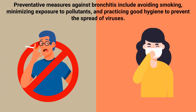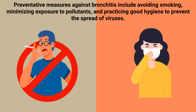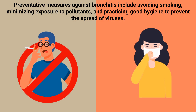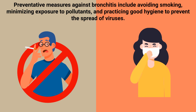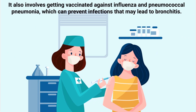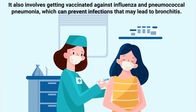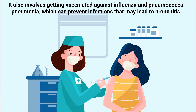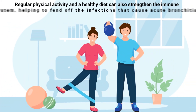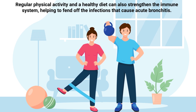Preventative measures against bronchitis include avoiding smoking, minimizing exposure to pollutants, and practicing good hygiene to prevent the spread of viruses. It also involves getting vaccinated against influenza and pneumococcal pneumonia, which can prevent infections that may lead to bronchitis. Regular physical activity and a healthy diet can also strengthen the immune system, helping to fend off the infections that cause acute bronchitis.